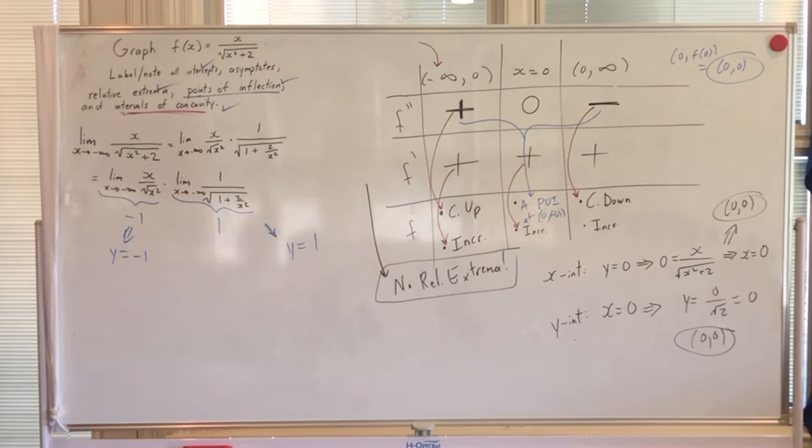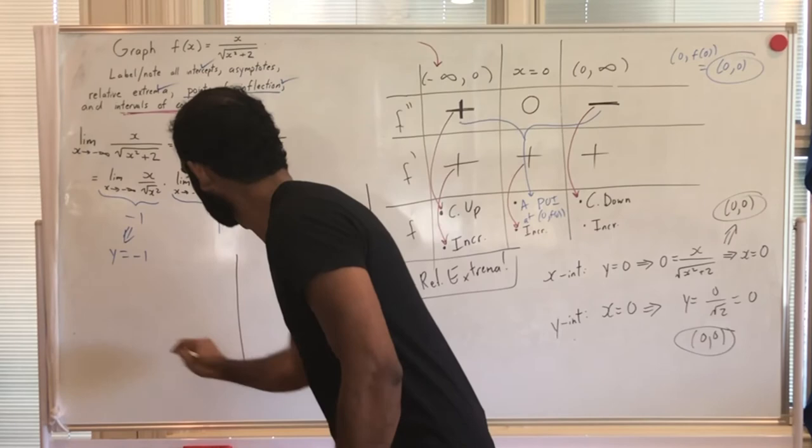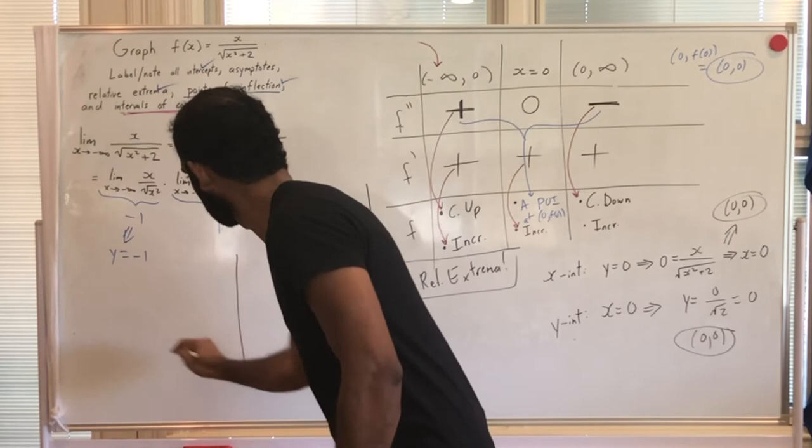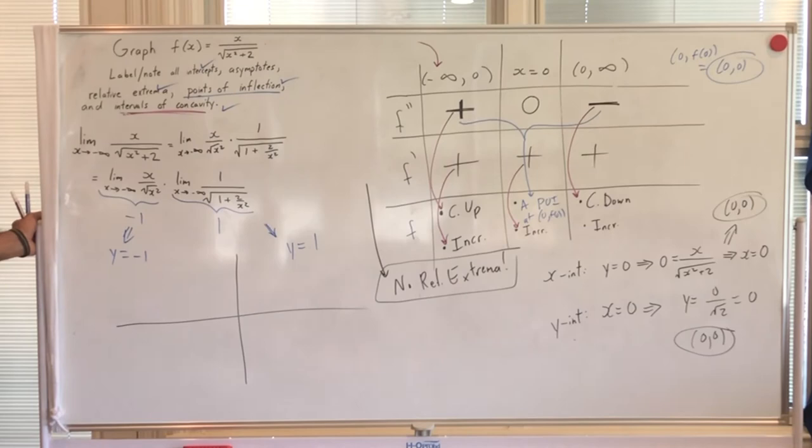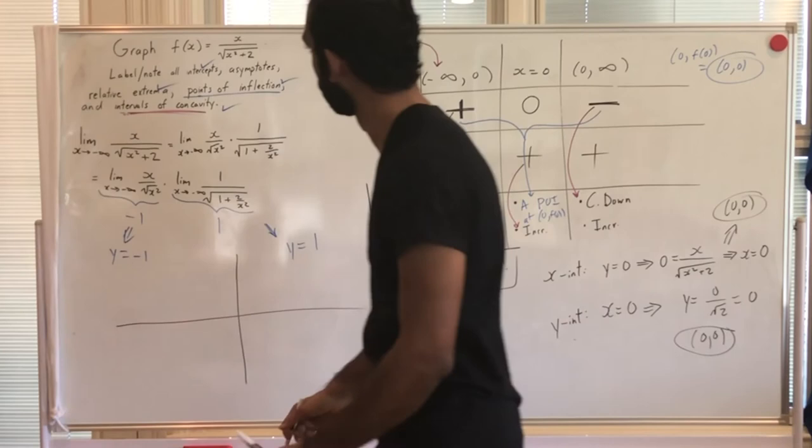So we have asymptotes, intercepts, and all our calculus information. It is time to graph. Let's start by putting the intercepts and points of inflection on the board.